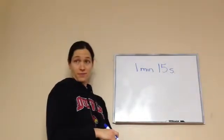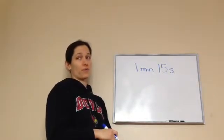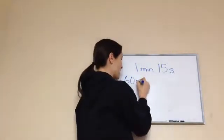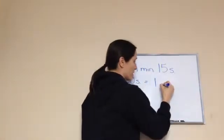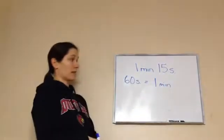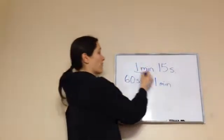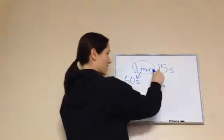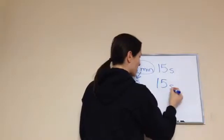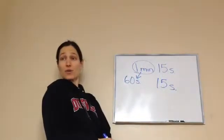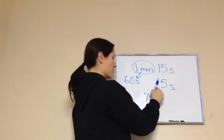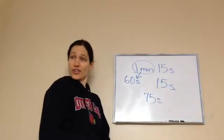What do I need to know? There are 60 seconds in a minute. Very good, Eli. 60 seconds equals one minute. So we have one minute up here, which is really 60 seconds. Then I have 60 seconds plus this 15 seconds, and how many seconds did he run a quarter of a mile? 75 seconds. 60 plus 15 equals 75 seconds.